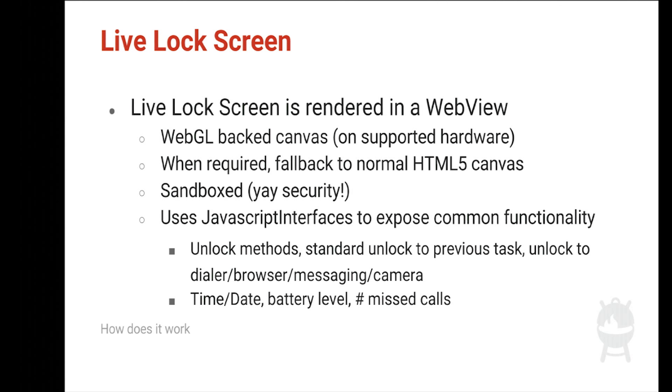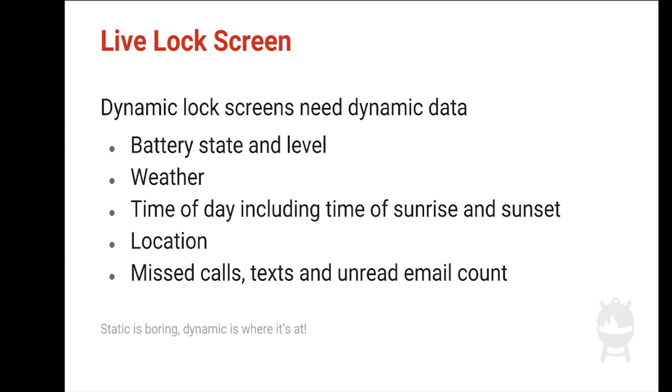Because it's a dynamic lock screen, we need dynamic data. We provide weather via a Yahoo API, including the condition text, the city, and constants for weather types like thunderstorms or snow — so the theme can change animations based on weather. We also provide time-of-day data using something called the Twilight Service, which takes the user's geolocation and tells us when sunset and sunrise are, so the lock screen can show a night scene after sunset or animate a sunrise.